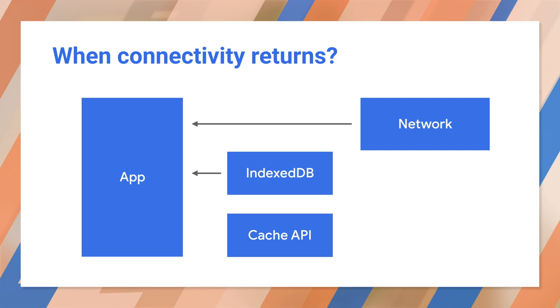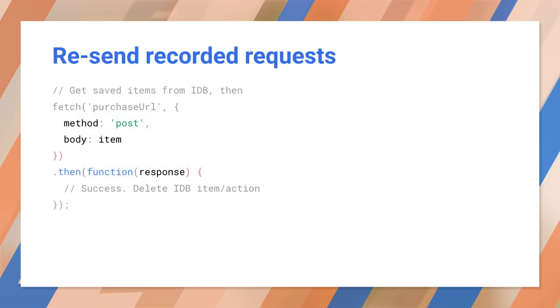So how do we use this once connectivity returns? Once connectivity returns, the recorded items or actions can be retrieved and sent to the server. If the requests are successful, the corresponding item or action can be deleted from the local data store. So now you know how to pre-cache static resources such as HTML, CSS, and JavaScript, and how to deal with data and dynamic content. That helps ensure your users get a great experience that's resilient to flaky connectivity and can even work offline. I hope this has helped you understand the basics of local caching and data storage. Thank you very much.